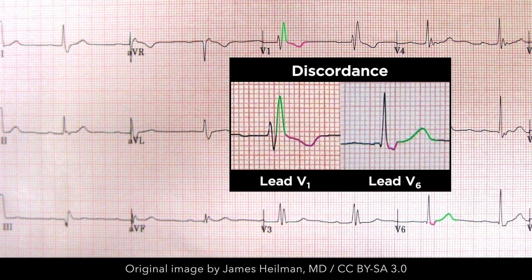The ST-segment and T-wave are deflected in the opposite direction of the QRS complex. Essentially, when the QRS complex is positive, then the T-wave is inverted, and vice versa. Conversely, concordance of the QRS complex with the ST-T wave in a patient with right bundle branch block is suggestive of myocardial ischemia or infarction or other pathology.